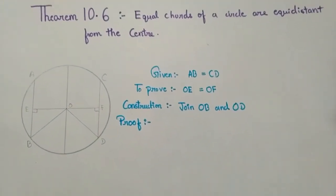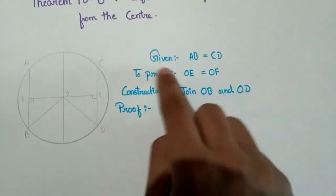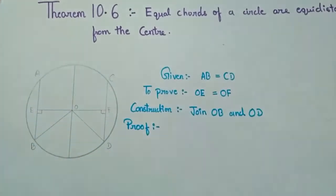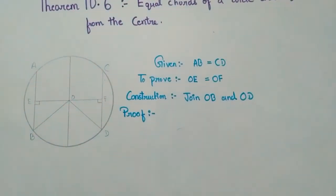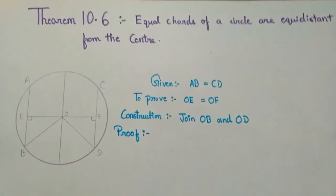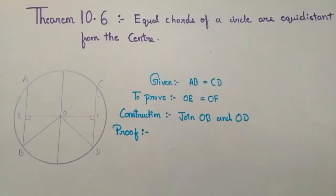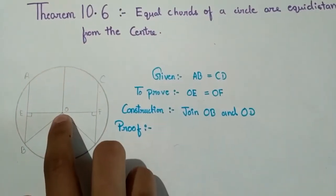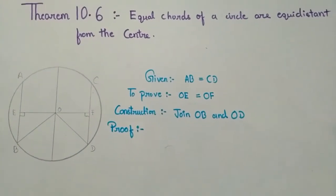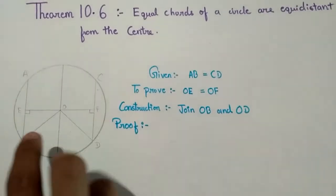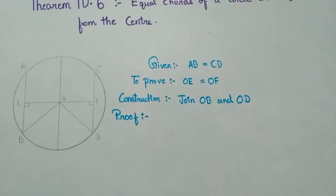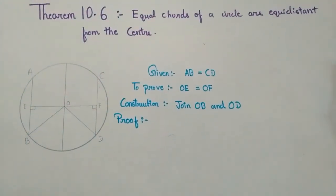I have done the figure here, so let's move to the proving. We are given that chord AB is equal to chord CD, and we have to prove that the distances of these two chords from the center are equal. The distance is always measured through a perpendicular, because perpendicular distance is the shortest distance between a point and a line. So OE is the distance between center O and AB, and OF is the distance between center O and CD.